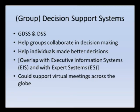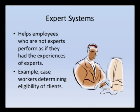Expert systems are usually used at the operational level of the organization. In public administration, the people who would use expert systems might be identified as street-level bureaucrats — those who actually work with the clients of the organization. Decision support systems can also support collaboration and virtual meetings across the globe. Expert systems help employees who are not experts make good, fair, and uniform decisions as if they had many years of experience.